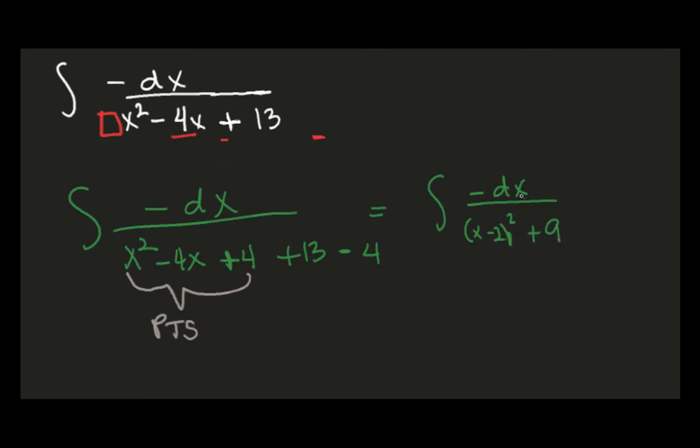And now it looks a lot more like an inverse trig. dx over box squared plus a squared. So what you can do is you can then let u equal x minus 2, du then becomes dx.